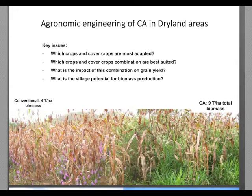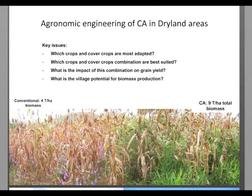Another important issue is which crops and cover crops combinations are best suited, which crops and cover crops have little impact on grain yields, and what is the total village potential of biomass production.